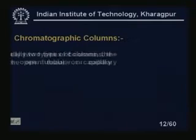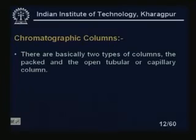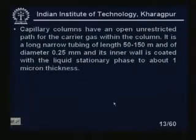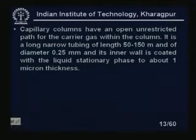There are basically two types of chromatographic columns: the packed bed column and the open tubular or capillary column. Packed columns are made of stainless steel, copper, or glass tubing with diameter 1.6 to 9 mm and typically 3 meters in length, arranged in a zigzag fashion. Capillary columns have an open, unrestricted path for the carrier gas, with length 50 to 150 meters, diameter 0.25 mm, and the inner wall coated with liquid stationary phase to about 1 micron thickness.